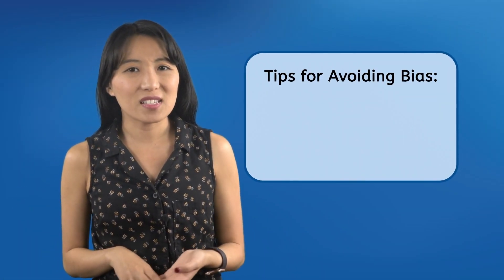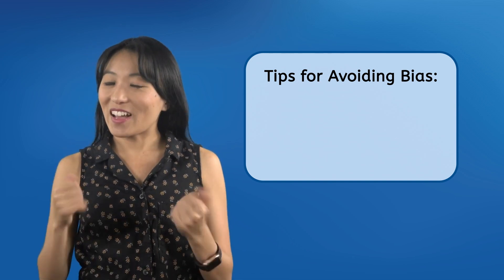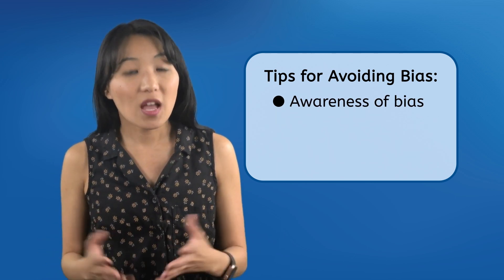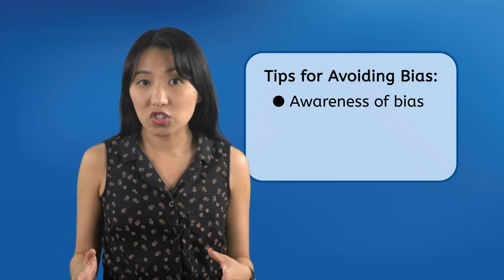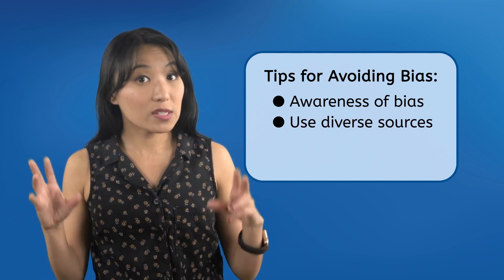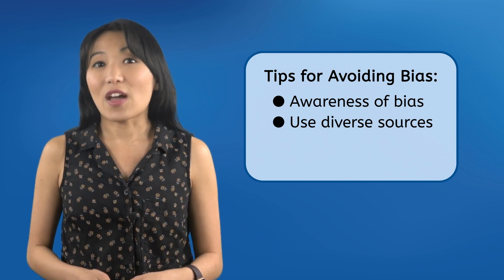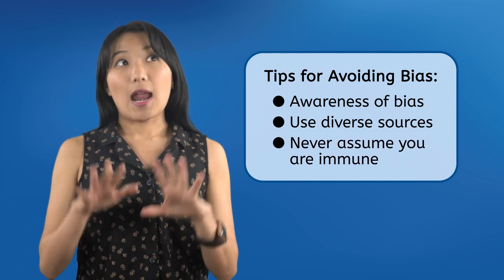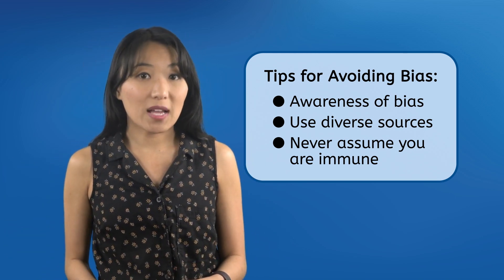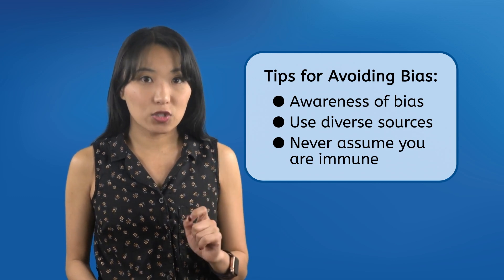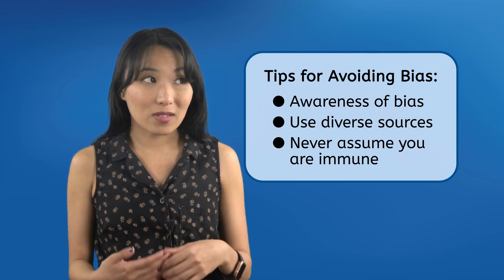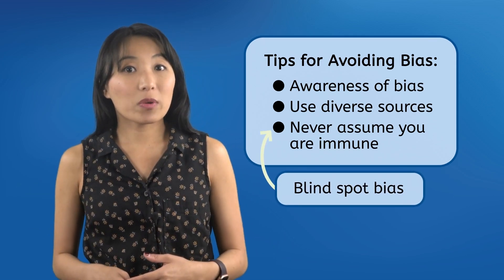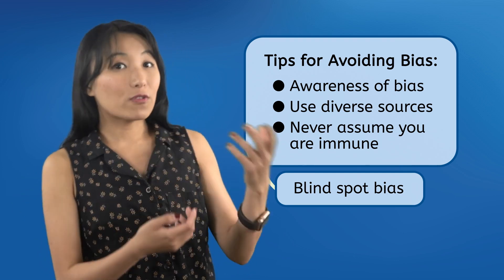So what can you do to avoid falling for bias and make sure you're getting all the facts? You're already doing the most important thing right now, which is learning how bias works and becoming aware of how it can affect you. Get your information from multiple different sources, preferably sources that disagree with each other, so you can learn details that one source might be trying to omit or spin. Finally, never assume that you are immune to bias. People who believe they are immune to bias are the easiest to fool. This itself is a form of bias known as blind spot bias, where we recognize when others are being fooled by biased information but fail to recognize it in ourselves.